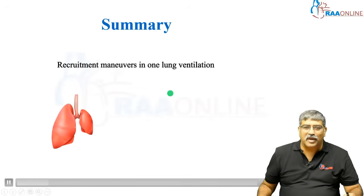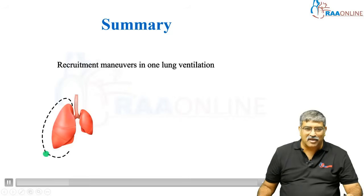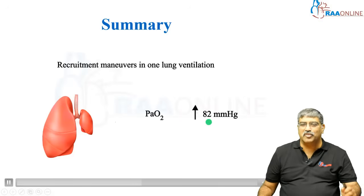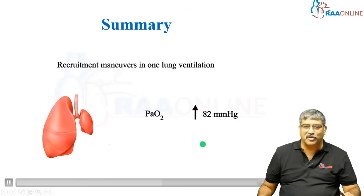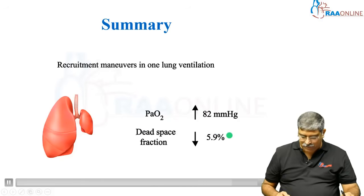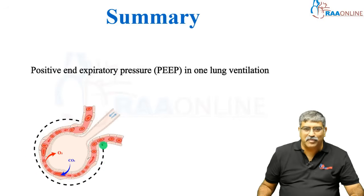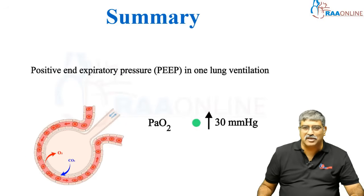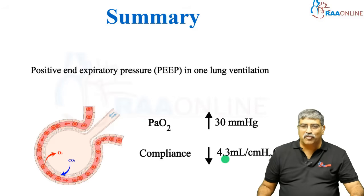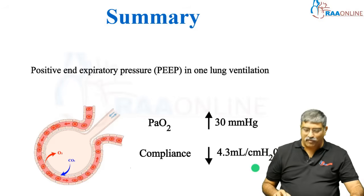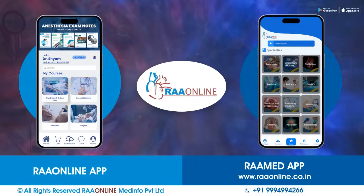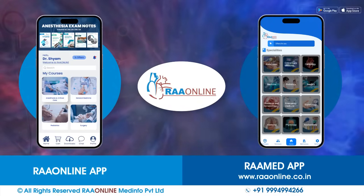To summarize recruitment maneuver and one-lung ventilation on the non-operative side: a recruitment maneuver increases PaO2 by 82 mmHg and dead space fraction comes down by approximately 5.9 percent. Applying PEEP to the dependent lung increases PaO2 by 30 mmHg and compliance decreases by 4.3 mL per centimeter of water.